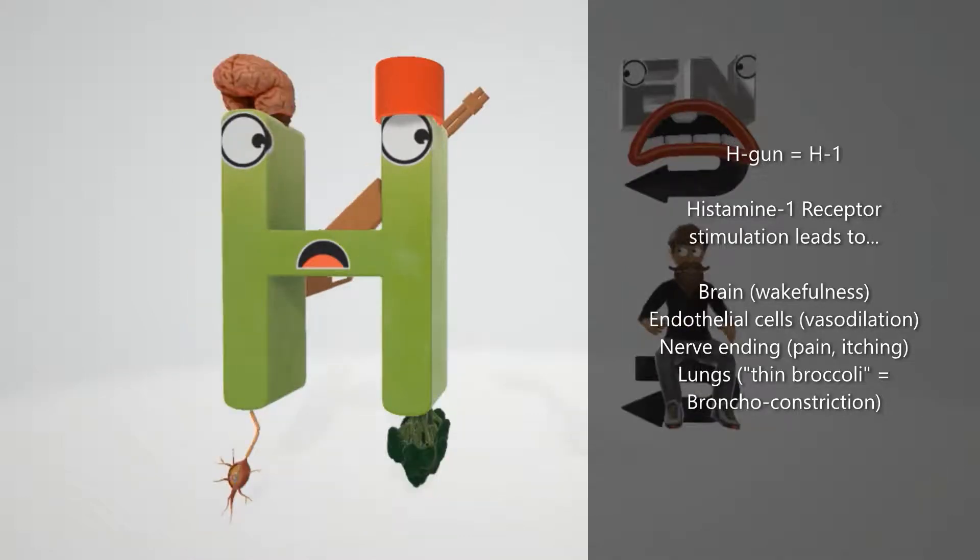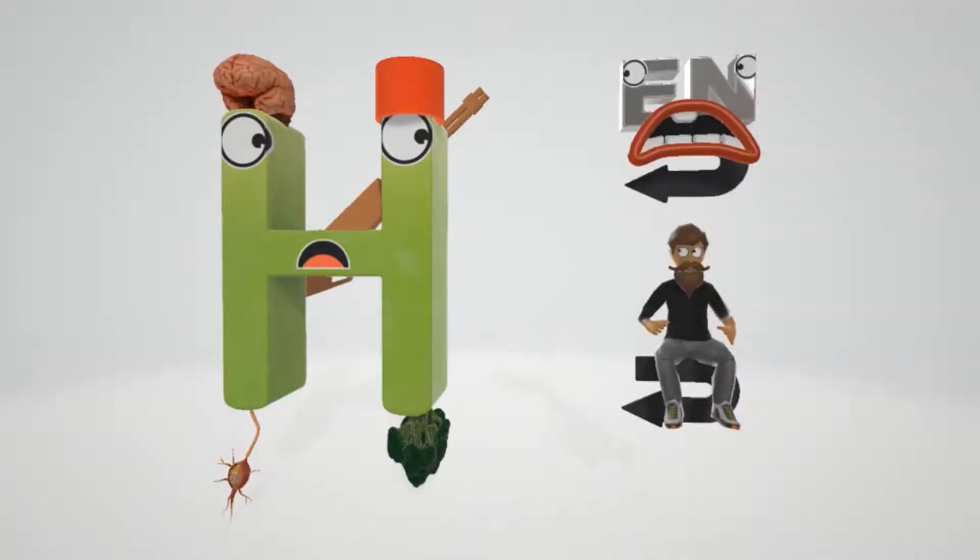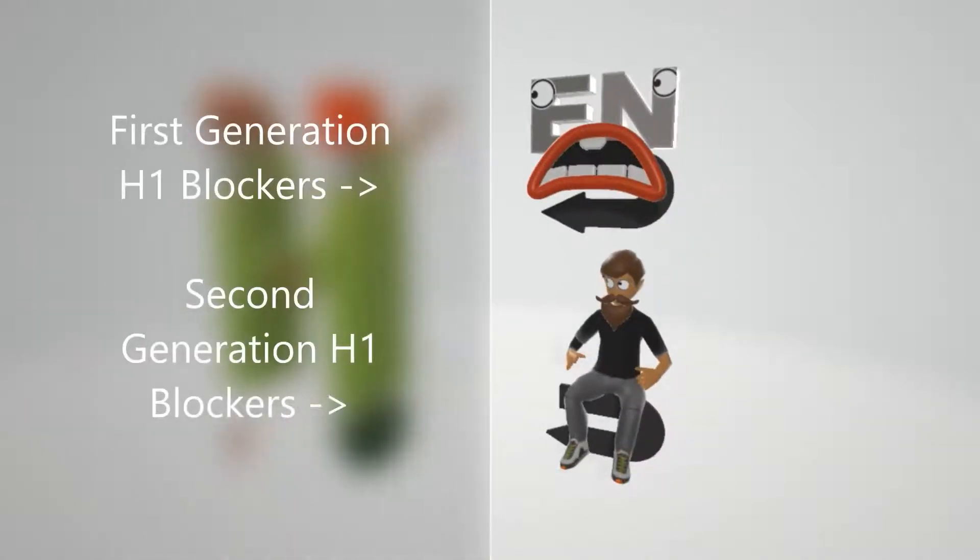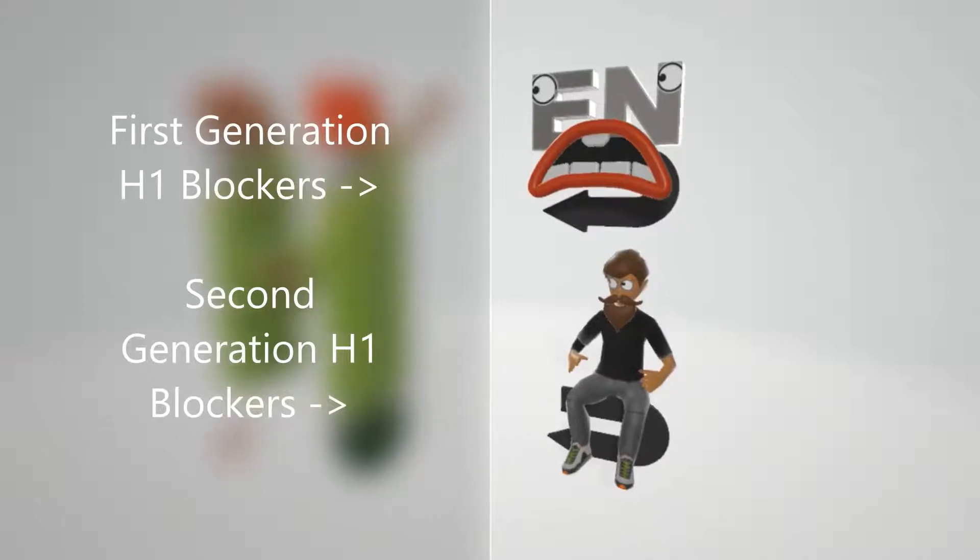Now that we've talked about histamine 1 receptors, the H1 receptors, let's talk about the blockers. That's what's going on on this side of the scene. We have these two guys: on top, the first generation histamine 1 blockers, and on the bottom, the second generation histamine 1 blockers.